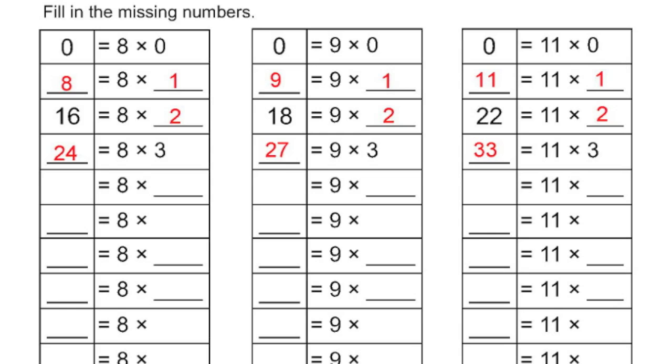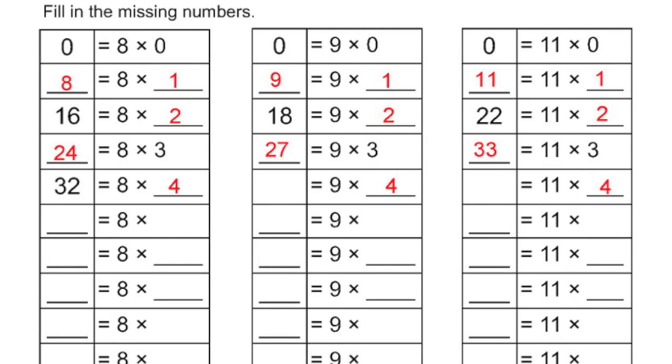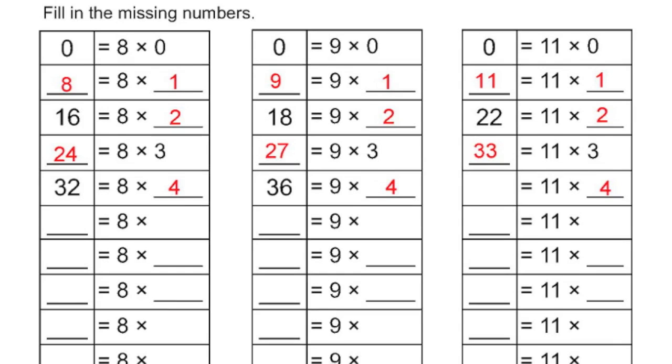Let's move into the row involving 4. We've been going down 0, 1, 2, and 3. So let's put in our 4s there. 8 times 4, 9 times 4, and 11 times 4. Well, 8 times 4 equals 32. 9 times 4 equals 36. And 11 times 4 equals 44.